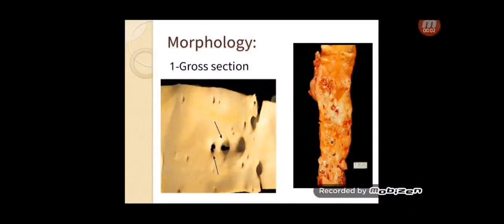A new speaker introduces the morphology of atherosclerosis. Grossly and macroscopically, we will discuss the fatty streak and dot, then gelatinous lesion, atheromatous plaque, and complicated plaque. The fatty streak and dot appears early in life, especially in the first year, in the aorta and major arteries. Grossly it appears as a slightly elevated yellow small dot. Microscopically, it consists of closely packed foam cells, lipid-containing smooth muscle cells, and extracellular matrix including collagen and proteoglycans.